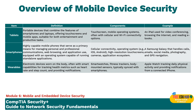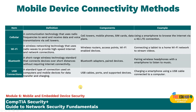Wearable devices are electronic devices worn on the body, often with smart capabilities for tracking health metrics such as heart rate and step count, and providing notifications. We now have smartwatches, fitness trackers, and body-mounted sensors typically synced with a smartphone, so whatever is on your mobile phone you can check on these wearable devices as well. An Apple Watch, for example, tracks daily physical activity and provides notifications from a connected iPhone.